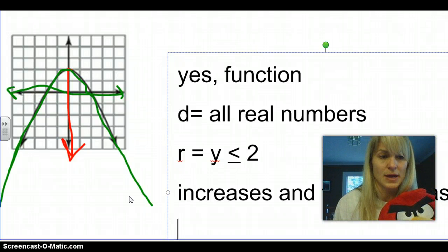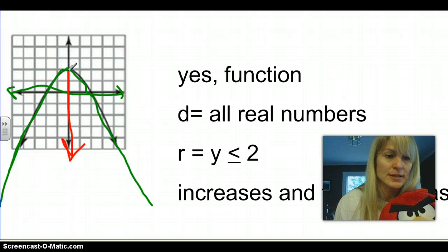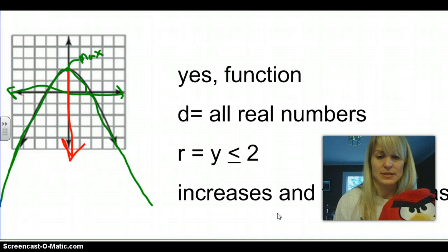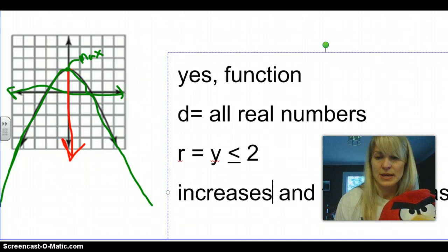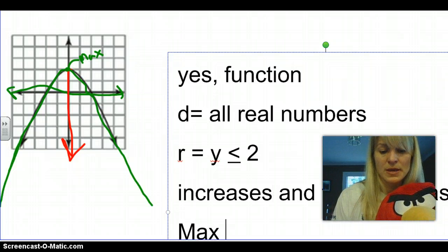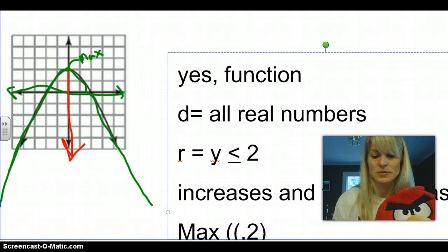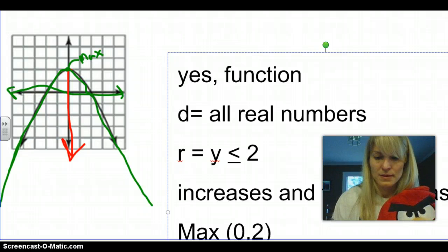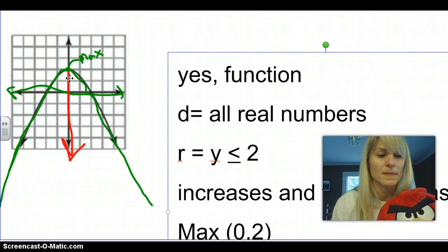The last thing is we're looking to see if it has a maximum or minimum. This is the tallest point — it's not going to get above here — so this is called your maximum. There's no minimum because it goes on forever in the negative direction. We will say there is a maximum, and that maximum is at (0, 2). That's my maximum point. If it were the other way, it would have a minimum point.